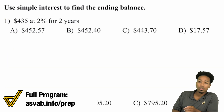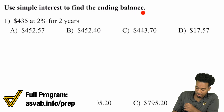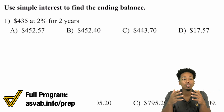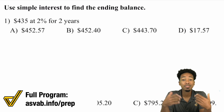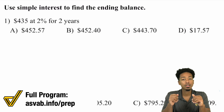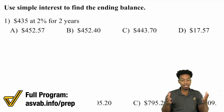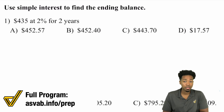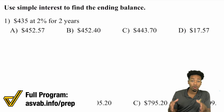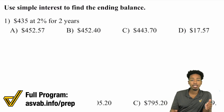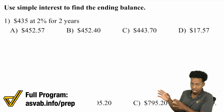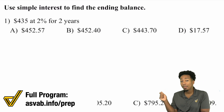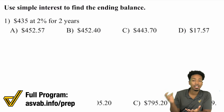So number one, what we need to do here is use simple interest to find the ending balance. Now very quickly, before we even begin, this is very important. Here's what interest is: interest is pretty much the money that you earn over time from investing. So for example, if we're talking about simple interest, it means that let's say I put in $1,000 into some investment account. Simple interest means that I'm only ever earning money on that $1,000. I don't earn any extra money for the money that I earn. Compound interest does that. Simple interest is simple — you only earn money based off of what you put in. Compound interest is compounding, stacking on top of itself.